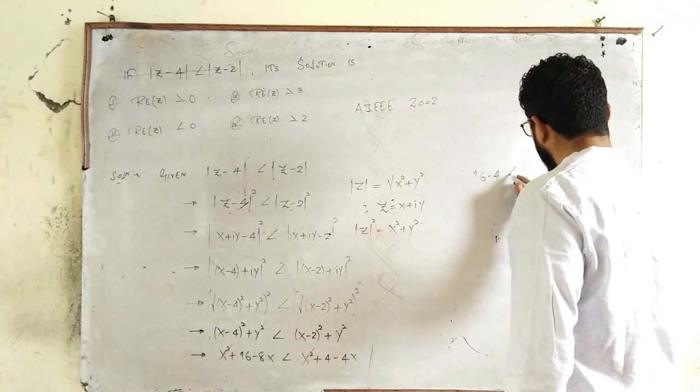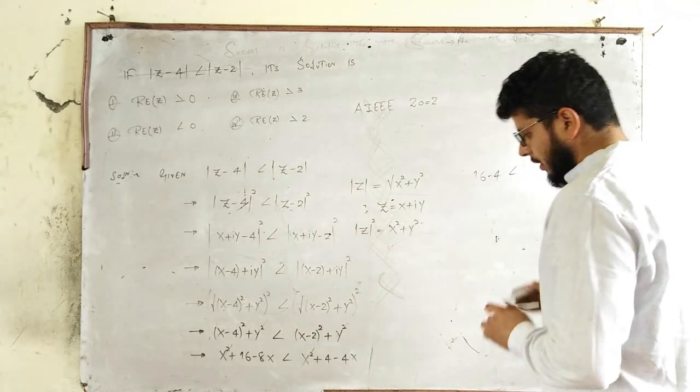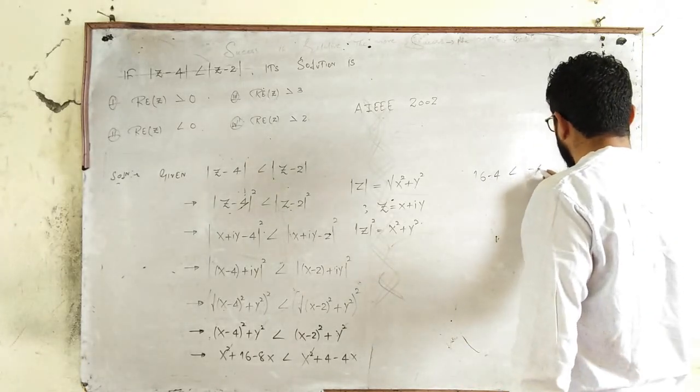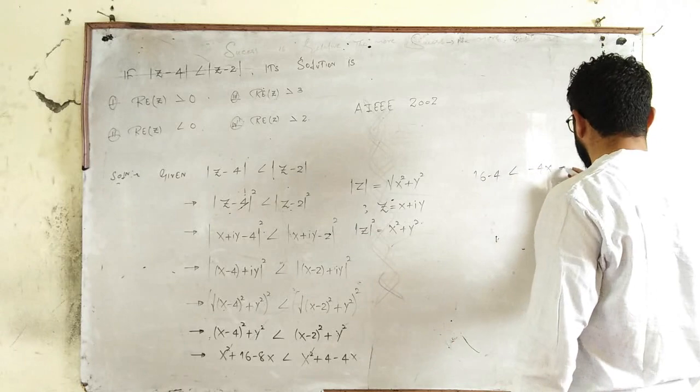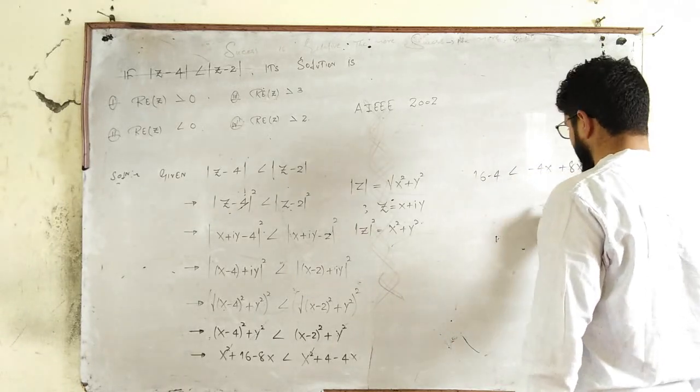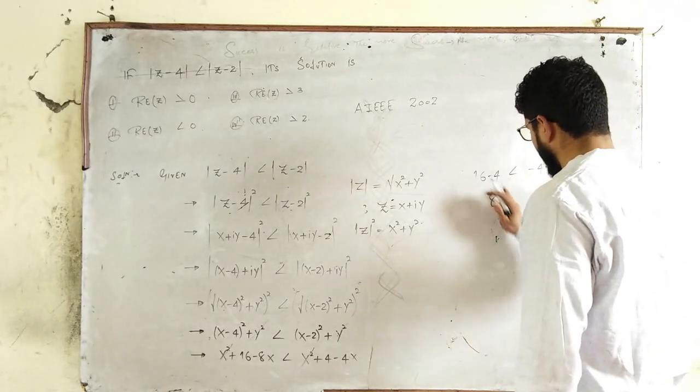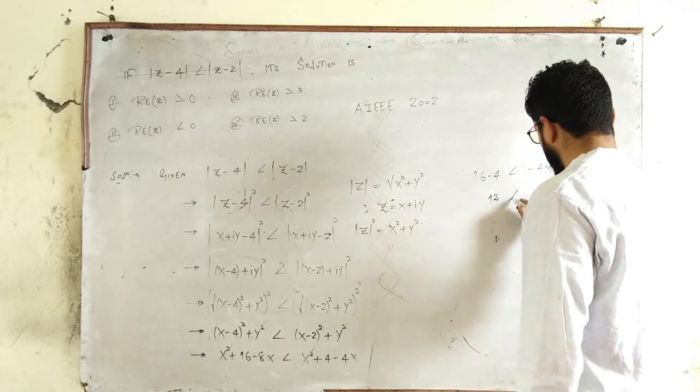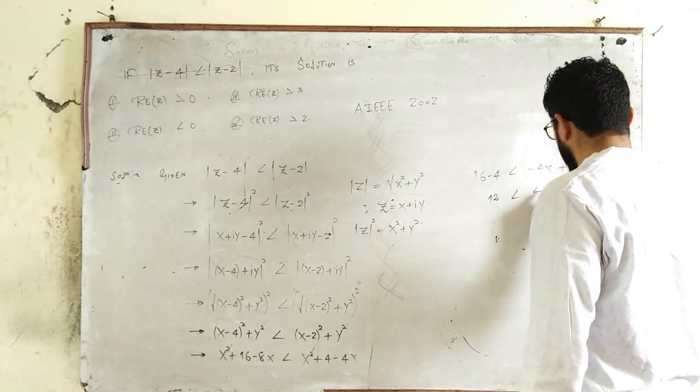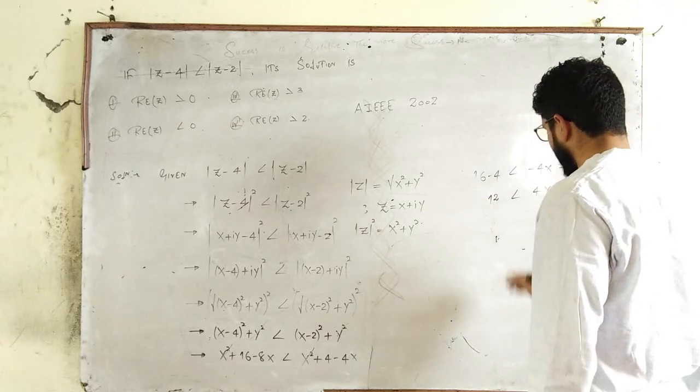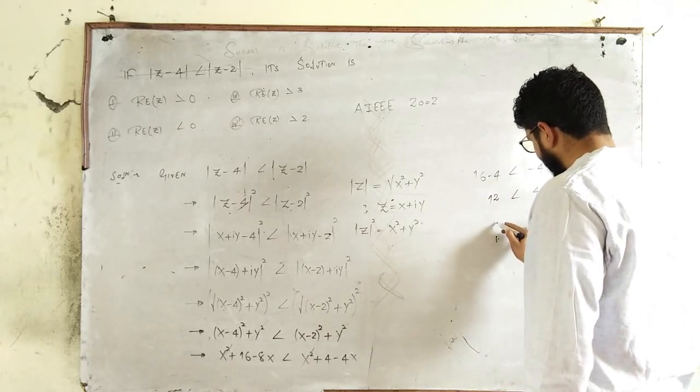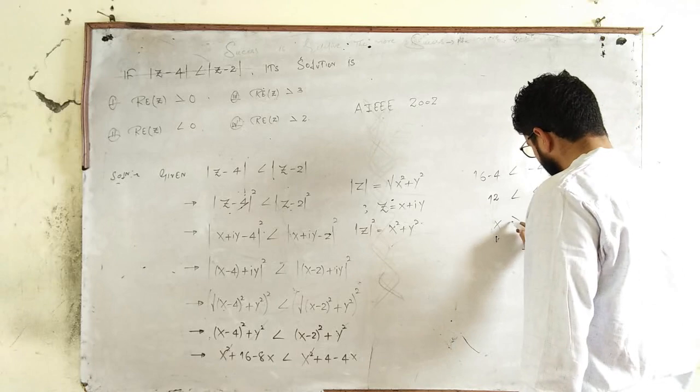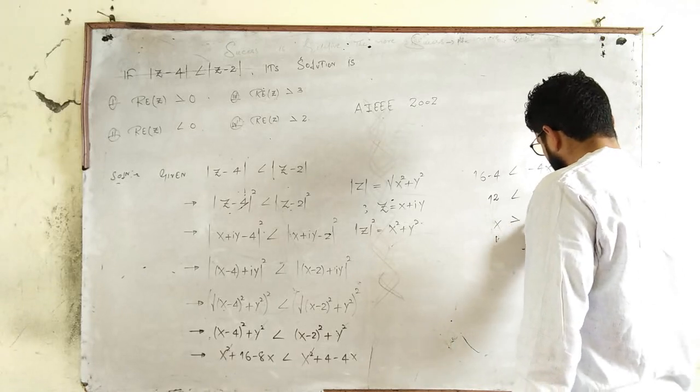Just like this together, then you have 16 - 4 is less than -4x, and that -8x will come to this side becoming +8x. So you will get 12 is less than 4x, or you can get x to be greater than 3.